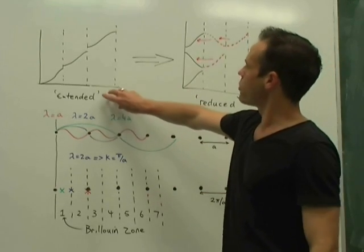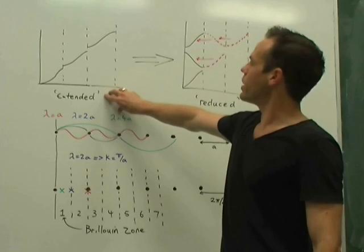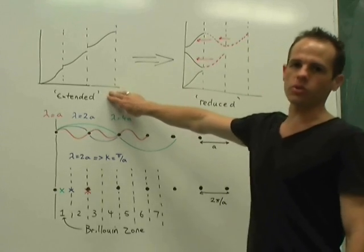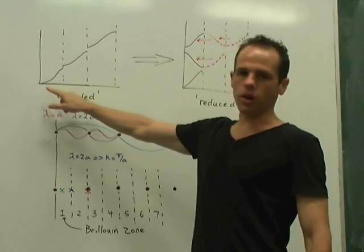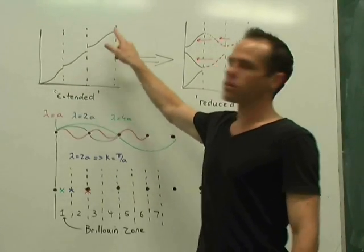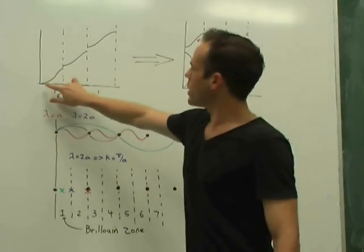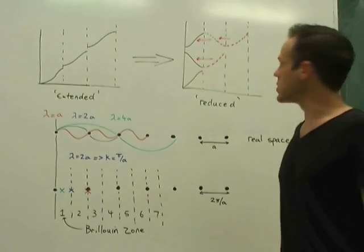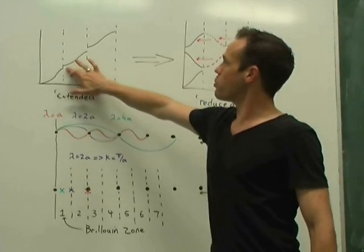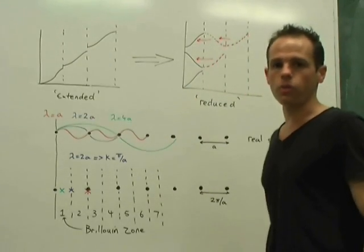You might be aware of the fact that you have, for example, a thing known as an extended zone scheme and a thing known as a reduced zone scheme. So these are electron bands in a solid, and so you get first band, second band, third band. You get gaps at the Brillouin zone edges, and these correspond to Bragg reflection of the electron wave.